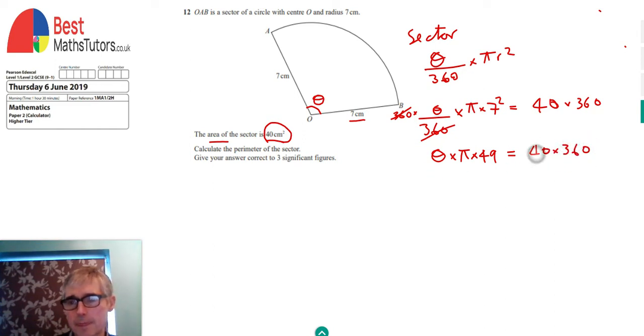We can then divide both sides by pi times 49. The 49 will cancel on the left as will the pi and it will leave me with 40 times 360 divided by pi times 49. If we put that into the calculator we get 93.5441 with more figures on your calculator.